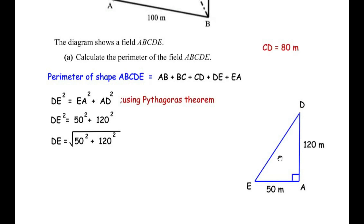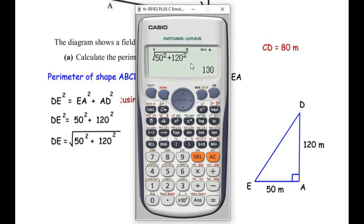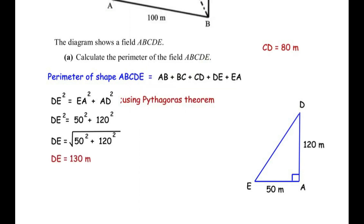Using Pythagoras' theorem again: DE squared equals EA squared plus AD squared. Substituting: 50 squared plus 120 squared. Taking the square root gives us DE equals 130. So the length of DE is 130 meters.